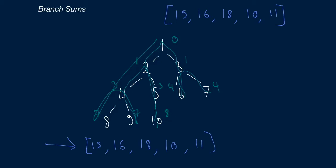As far as space-time complexity, this algorithm is going to run in O(n) time, where n is the total number of nodes in the binary tree. Why O(n)? We have to traverse through all n nodes in the binary tree to account for each of their values when calculating the various branch sums. At every single node, all we're doing are constant time operations — adding the value, checking if left or right nodes exist. So we do constant time operations n times total, giving us O(n) time.